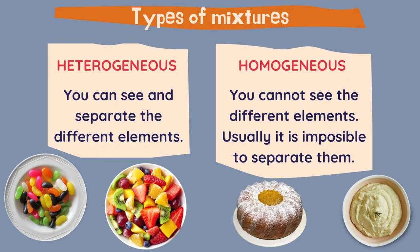On the other hand, with homogeneous mixtures you cannot see the different elements, and usually it is impossible to separate them. For example, this vegetable mash — you can tell that there are different vegetables but you cannot differentiate which vegetables are inside. Or in this sponge cake, we know there are different ingredients but we cannot see them or separate them.